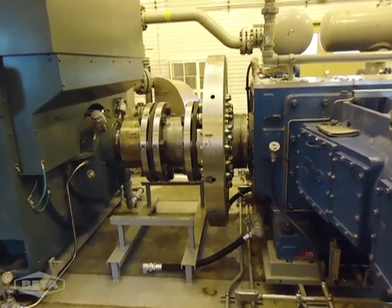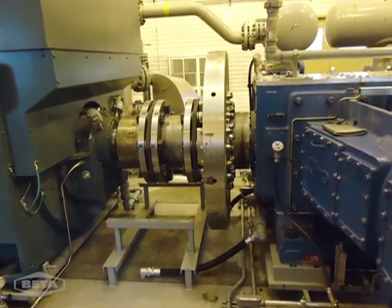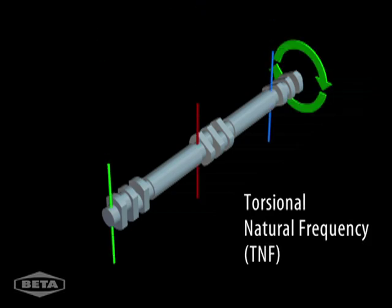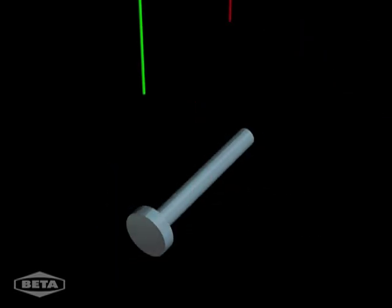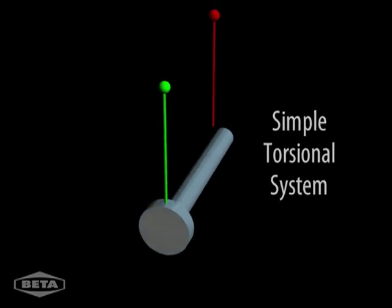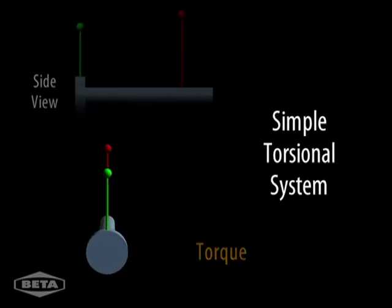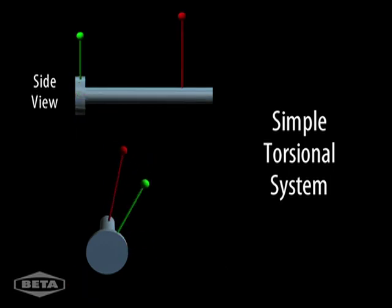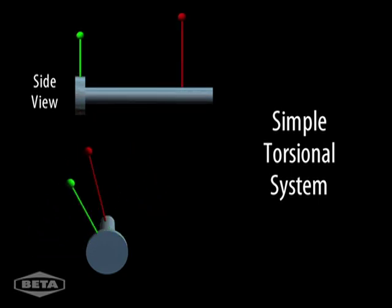A complete drivetrain or torsional system — for example, a reciprocating compressor with a coupling and an electric motor — has a torsional natural frequency, or TNF. Torsional natural frequency is defined as the frequency at which a shaft twists back and forth. Imagine twisting a shaft by rotating one end.